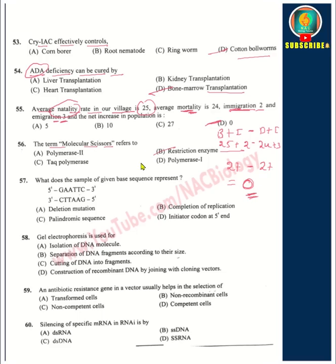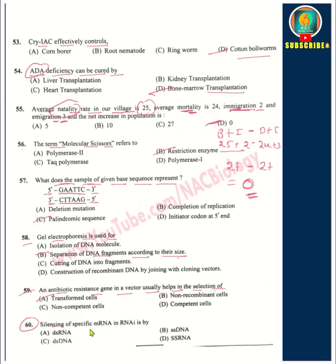Question 55: Restriction enzymes. The given base sequence 5'-GAATTC-3' and its complementary strand 3'-CTTAAG-5' reads GAATTC in both directions — this is nothing but a palindromic sequence. Question 57: Gel electrophoresis is used for separation of DNA fragments according to their size. Question 59: An antibiotic resistance gene in a vector helps in the selection of transformed cells. Question 60: Silencing of specific mRNA by RNA interference uses double-stranded RNA.